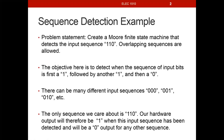Here's our problem statement for our sequence detection. We want to create a Moore finite state machine that detects the input sequence 1, 1, 0. Overlapping sequences are allowed. We'll define these terms throughout the lecture — what a Moore machine is versus a Mealy, and what an overlapping sequence is. Our machine needs to detect when the numbers 1, 1, 0 come in from left to right in that order.